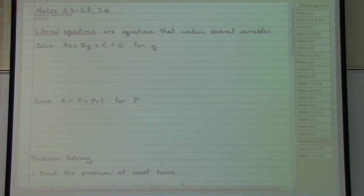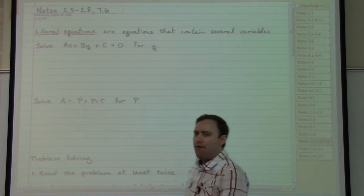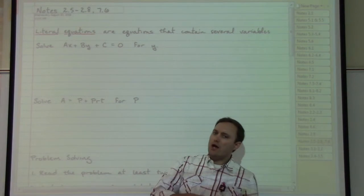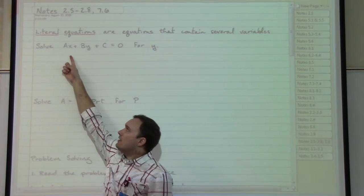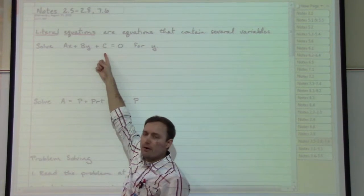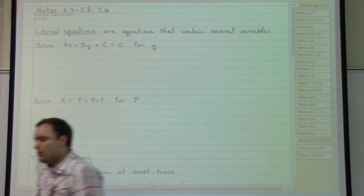The first example here, AX plus BY plus C equals zero, is the very generic formula for the equation of a line, which we will see a little bit more in the following chapter. However, in this particular case we're not so worried about what it means so much as the instructions which tell us we need to rearrange things so that we will have Y equals something. Well, if we need to get Y equals something, then that means anything that doesn't have a Y should be moved to the other side of the equal sign.